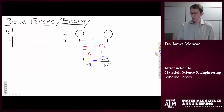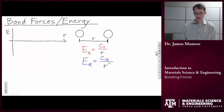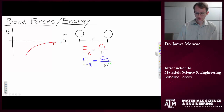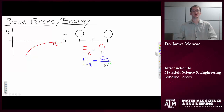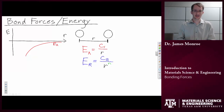If we were to plot the attractive energy, we'd see that Ea would look something like this. Now in an energy plot, lower is better — the lowest energy is the more relaxed state, and therefore it's more advantageous.